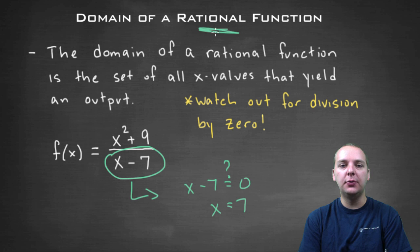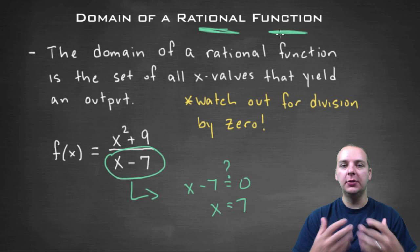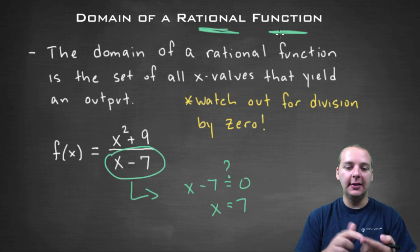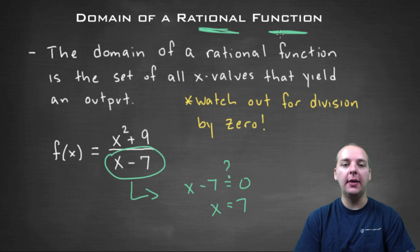So usually for these rational functions what you do is you'll simply say the domain is all real numbers, except this and that and the other bad spot that would make the denominator equal zero.